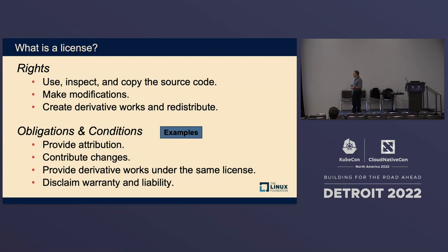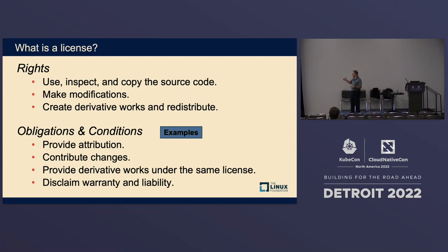The obligations that you typically have with most open source licenses often include providing attribution — acknowledging that you're using it. You may have to contribute changes if you make them, depending on the license. Some licenses require that if you create a derivative work combining the open source, you are required to license that new combined work under the same license as the open source.